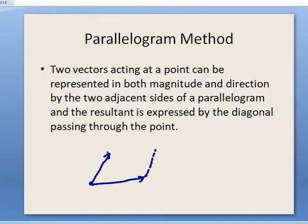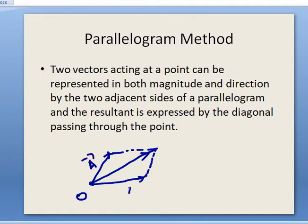The resultant of the two vectors is given by the diagonal. The two vectors act at point O, and the resultant R can be represented by the diagonal of this imaginary parallelogram.